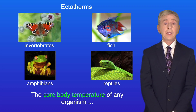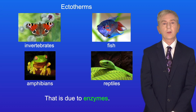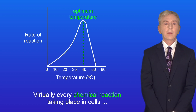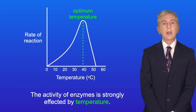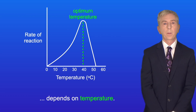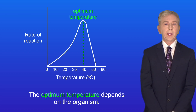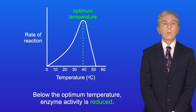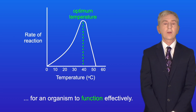The core body temperature of any organism is very important to how that organism functions, and that's due to enzymes. Virtually every chemical reaction taking place in cells is catalyzed by enzymes, and the activity of enzymes is strongly affected by temperature. I'm showing you here how the rate of an enzyme-controlled reaction depends on temperature. Enzymes work most effectively at their optimum temperature, and the optimum temperature depends on the organism. Below the optimum temperature, enzyme activity is reduced, which could mean that reactions may take place too slowly for an organism to function effectively.